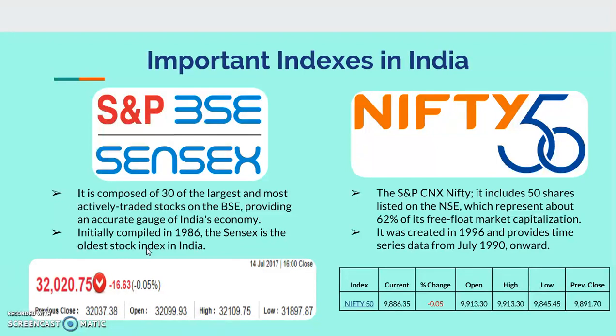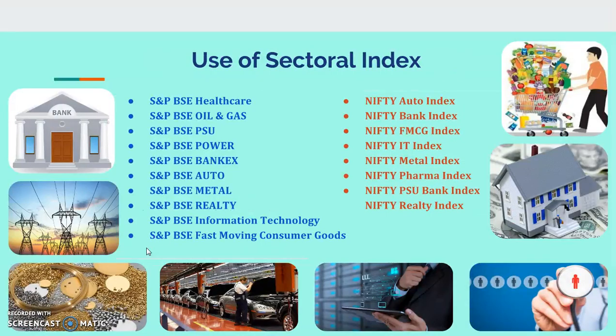Coming to Nifty — Nifty is made up of 50 stocks and is considered very good because only 1,600 companies are listed on Nifty, out of which 50 are used to calculate the Nifty 50. On the Bombay Stock Exchange, more than 5,000 stocks are listed. The index shows current change, open, high, low, and close — similar to Sensex.